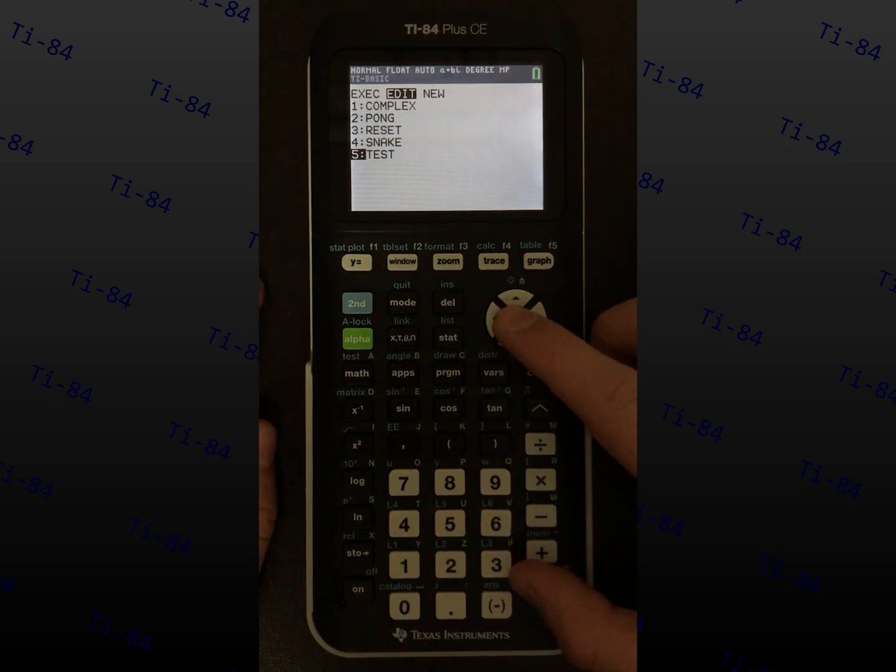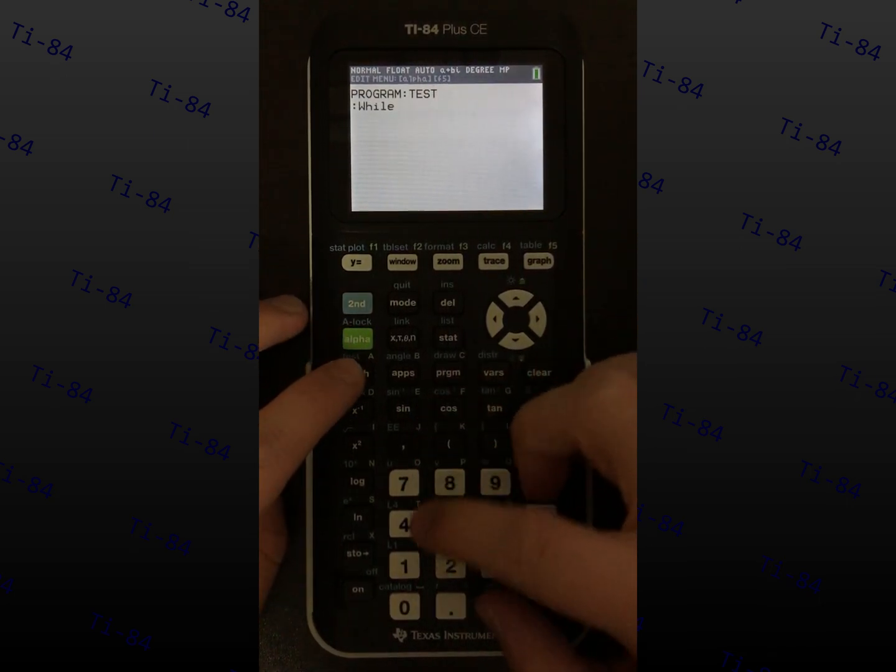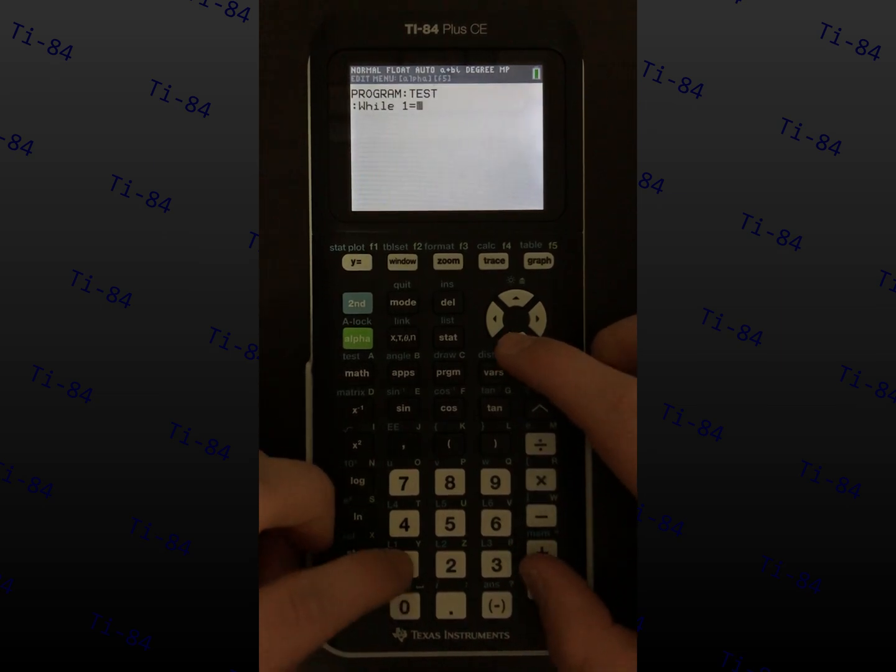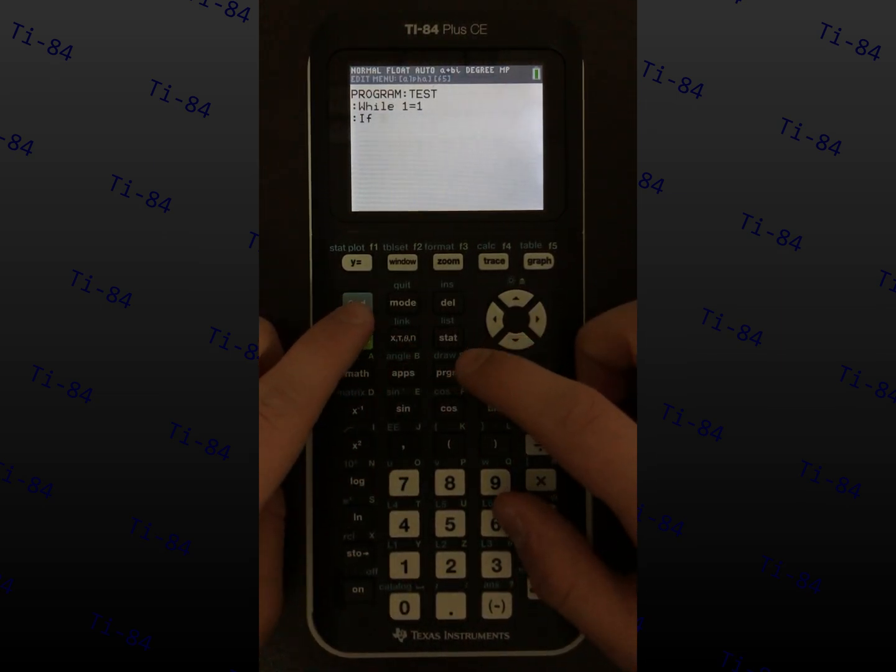Now, if you want to make a game, you'll need key inputs. Let's make a while loop so the code will loop forever for the purpose of this demonstration. Run an if statement that prints text if the right arrow is pressed, by using the get key function.